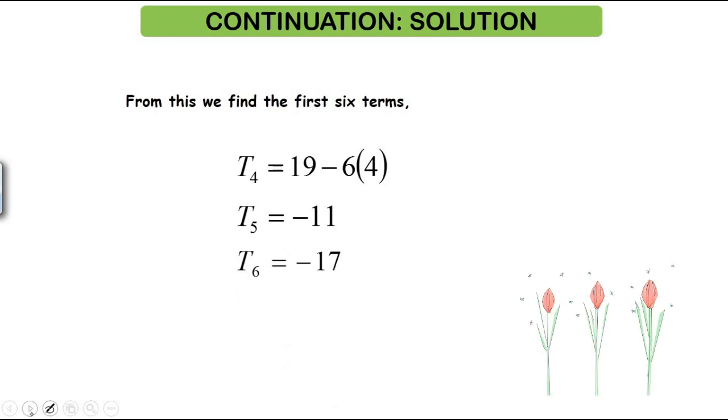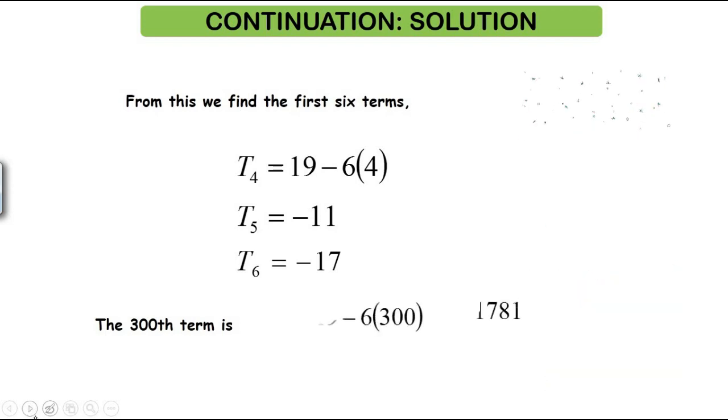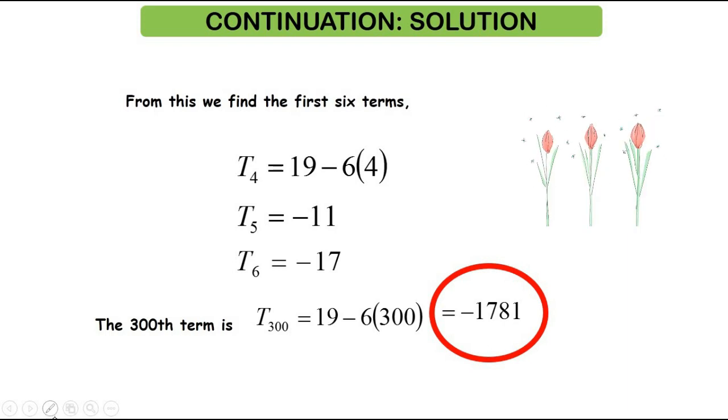Looking further up, the first 6 terms, because we have the first 3 already, so we just need to find T4, T5, and T6. But the 300th term might somehow be tricky, but then just use the related formula which is 13 plus 299 times negative 6. So substitute into formula, our answer should be negative 1781.